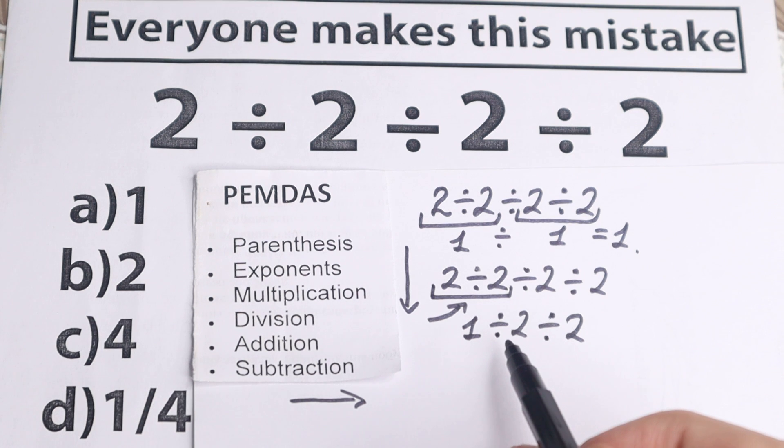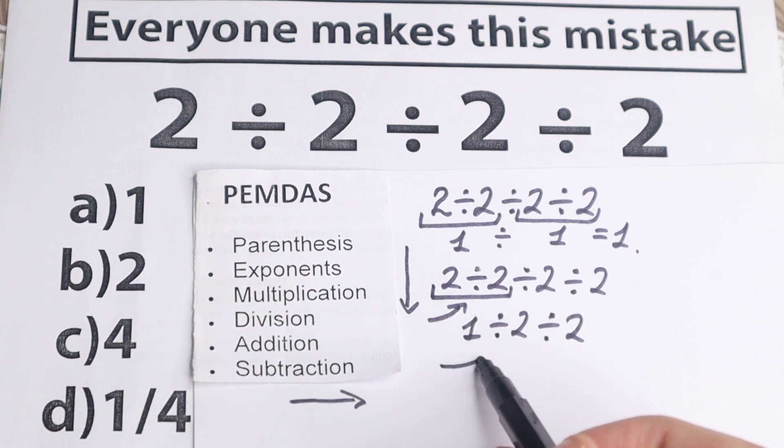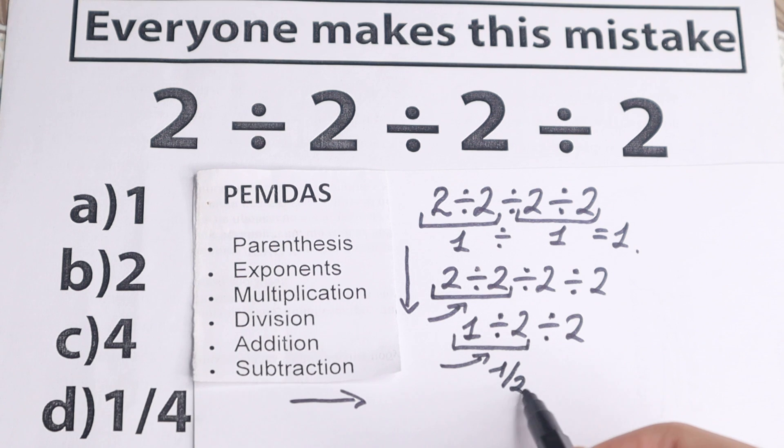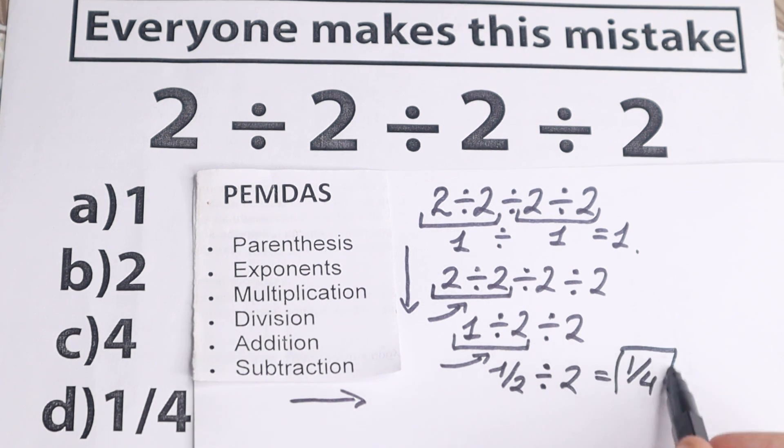Okay, now we need to scan what is the first sign from left to right. The first sign from left to right is this division, because we have only division, so we need to look at this division sign. 1 divided by 2, this is 1 half, I want to write it in a fraction way, and we have this division, so divide it by 2. 1 half divided by 2, this is 1 fourth, and this is our answer.